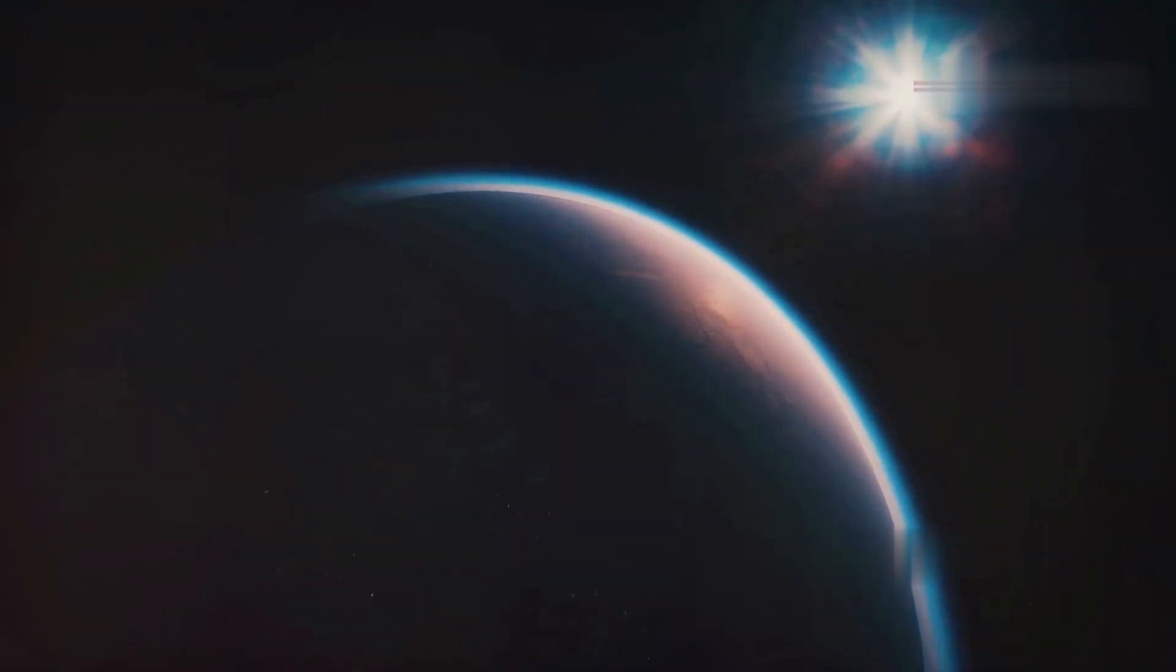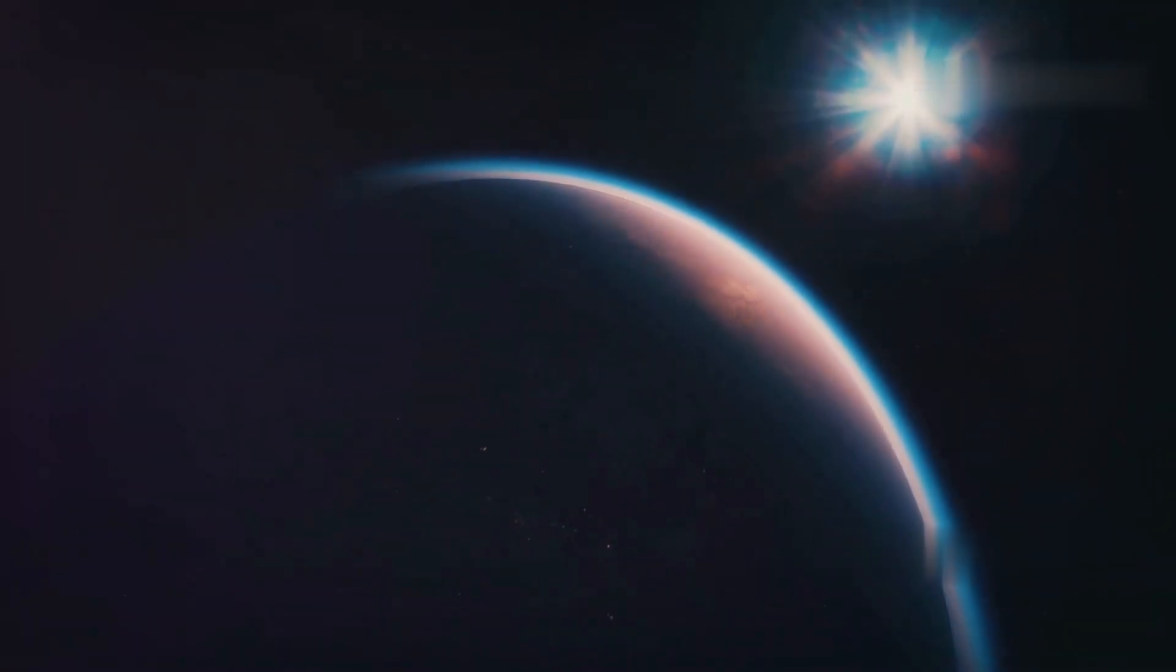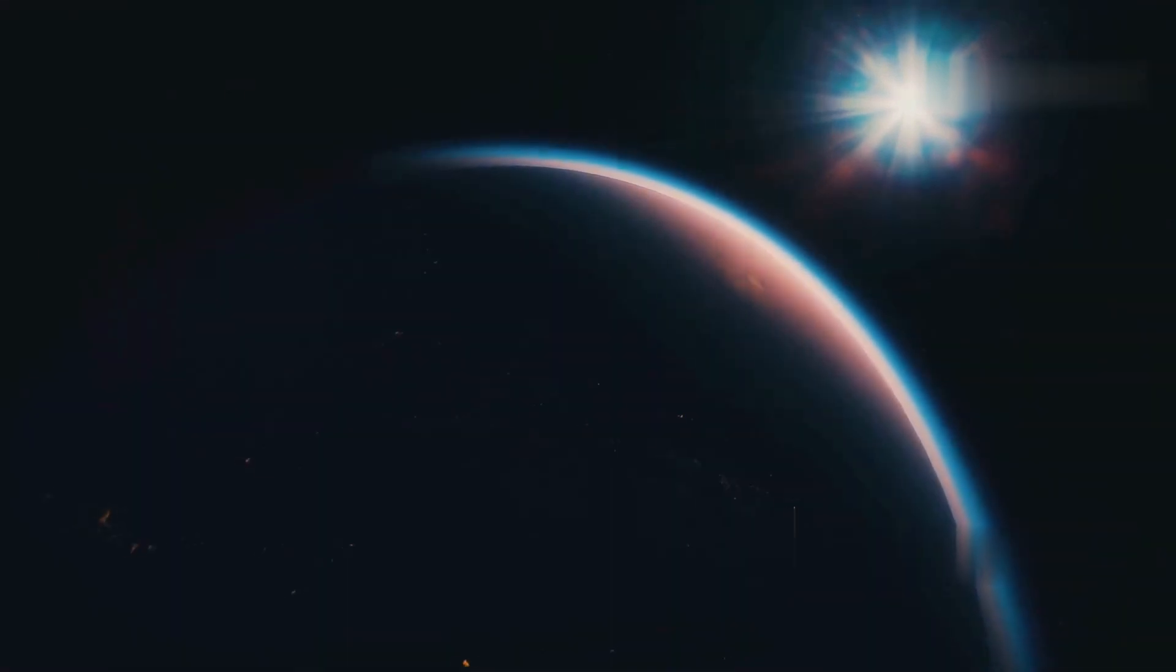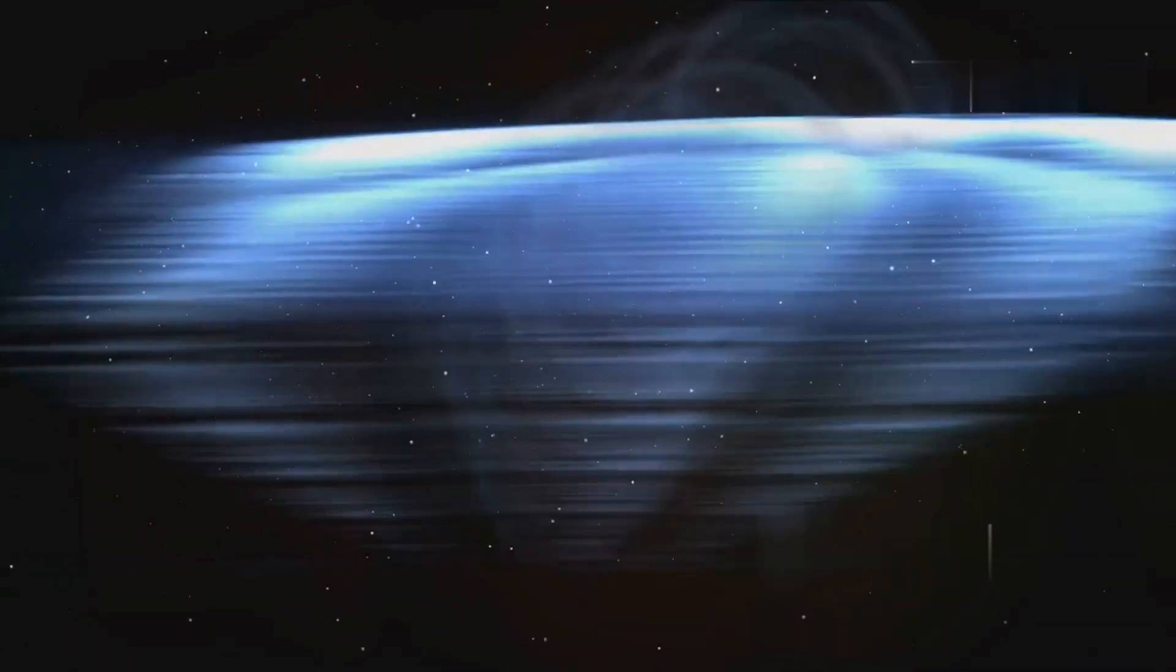For example, the nearest star to our sun, Proxima Centauri, is about 4.24 light years away. This means that the light we see from Proxima Centauri today left the star 4.24 years ago.